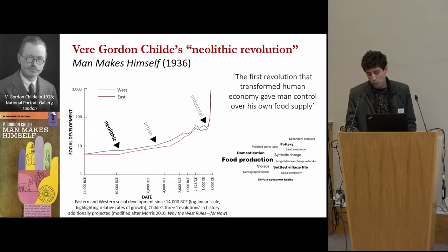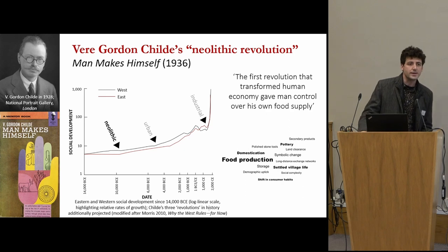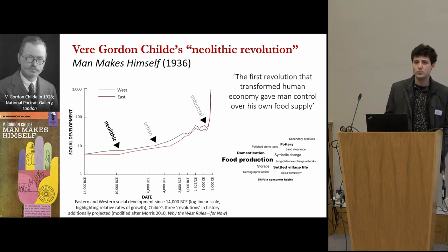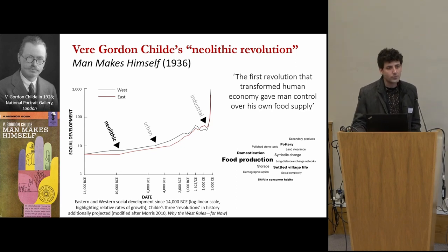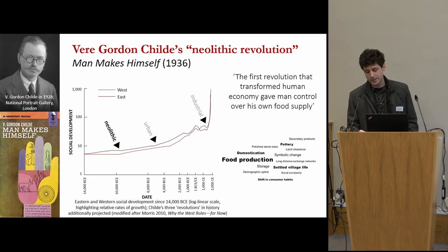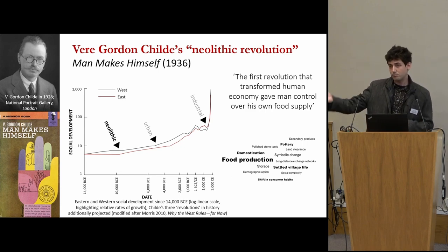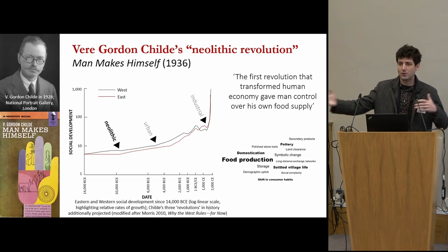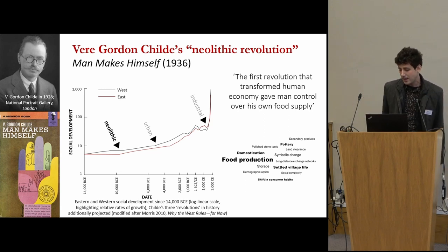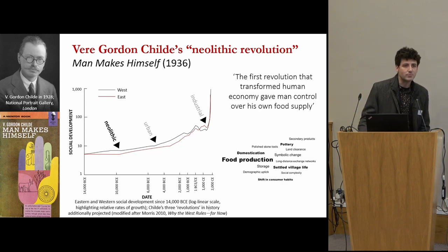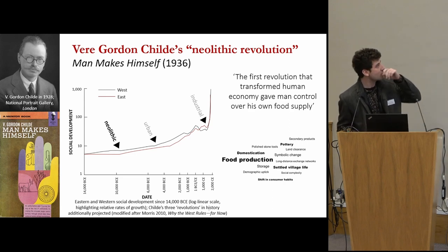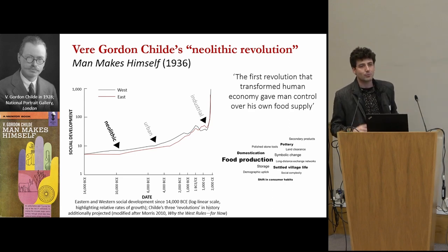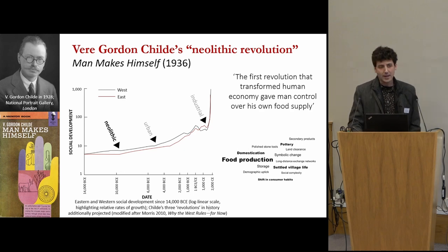In a neolithic or domestic economy, the idea is that goods are produced where they are consumed, within the household level. In an urban or town economy, because of services, you have consumers who are not necessarily producers, so you have a lot of people in between. In an industrial or national economy, goods are produced in one part of the country and consumed in another. And of course, the next stage — the global economy — where goods are produced in one country and consumed in another. So that's a very neat evolutionary scheme.